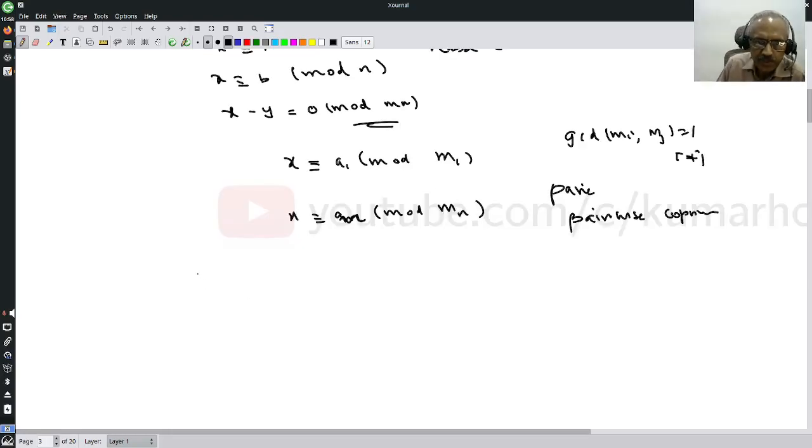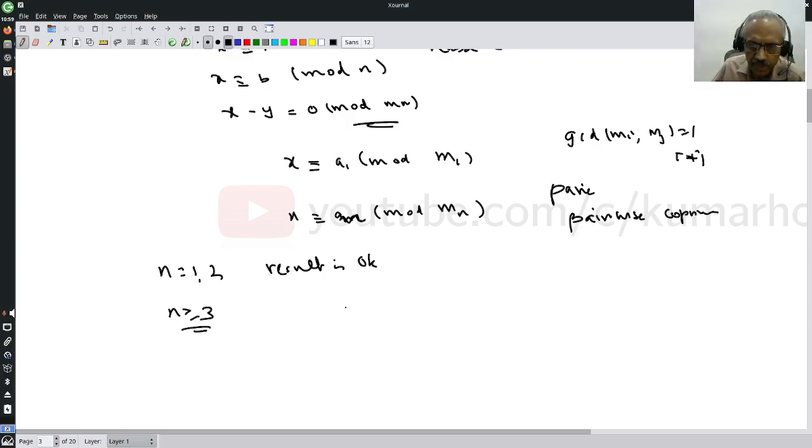What we do is prove by induction. When n equal to 1 or 2, result is okay. So let us assume n is greater than or equal to 3. Let us assume that I have done for up to n minus 1, then I want to prove up to n.